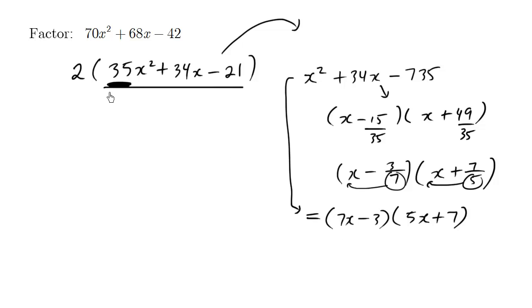So if I underline it in red, this trinomial here is equivalent to this factored form over here. So when we're asked to factor this original expression, which has a 2 already factored out, the final answer is actually equals to 2 times what we just solved, the mini problem. 7x - 3, 5x + 7. So this here is the fully factored form. We have 1, 2, 3 different factors including the number.